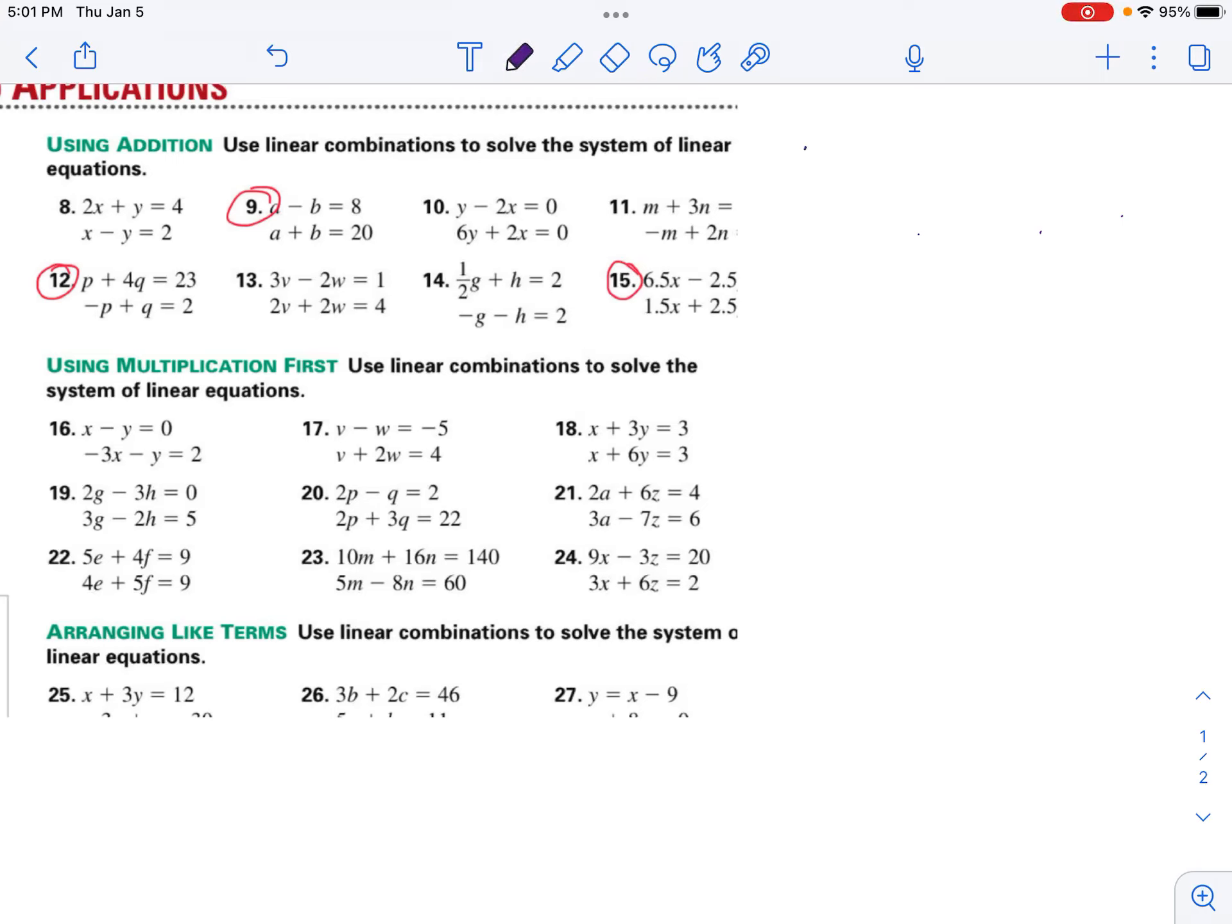We're going to take a look at number 9. We're using linear combinations to solve the system of linear equations. I have a minus b equals 8, and a plus b equals 20.